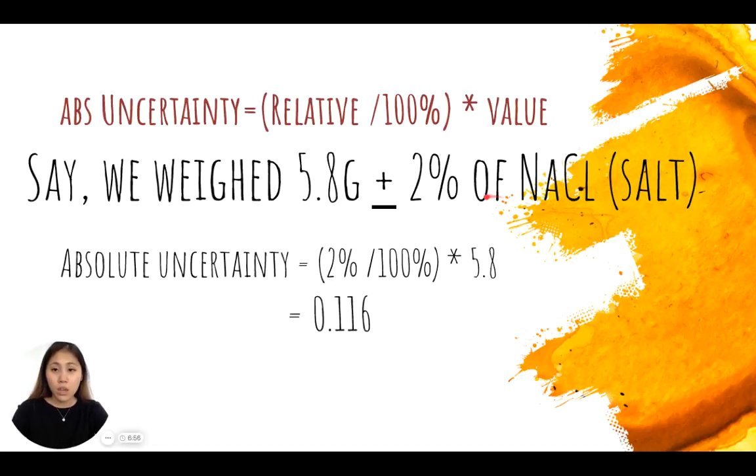We see that the grams of the salt that we're supposed to measure is to the tenths digit, so it's to one decimal point accuracy. This means that the electronic balance is only accurate to the tenths digit.